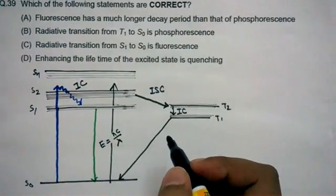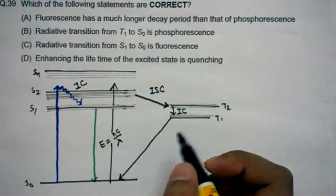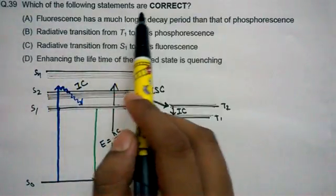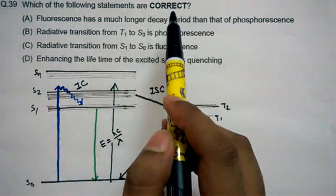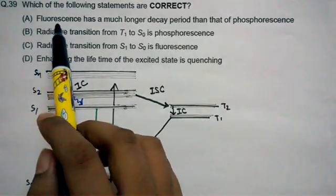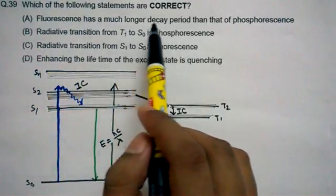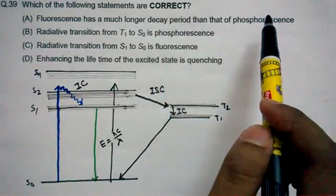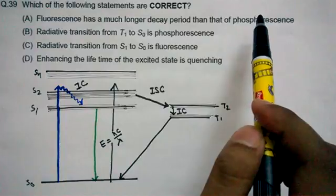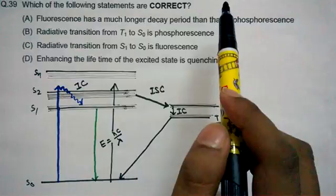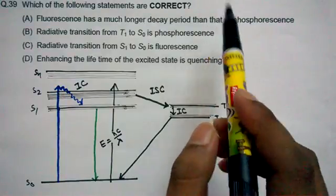It says which of the following statements are correct. As it's in an MSQ section, that means multiple options could be correct. Now we'll see. Fluorescence has much longer decay period than phosphorescence. So this particular thing is actually not correct, because fluorescence is fairly fast. So fluorescence could not have a longer decay period than phosphorescence.